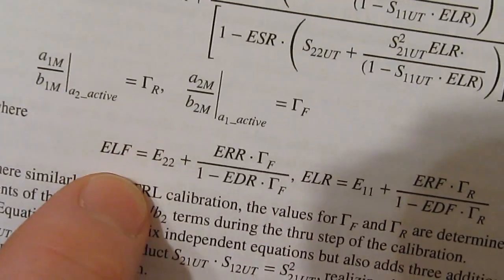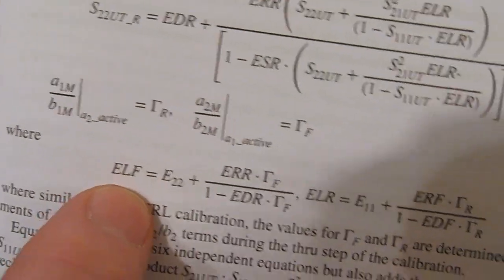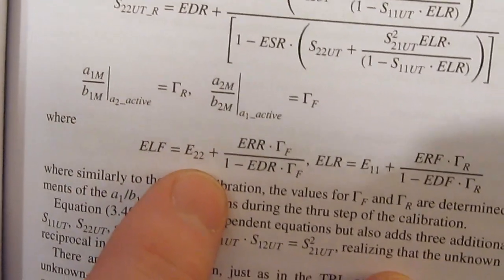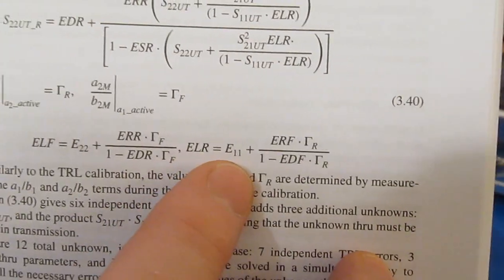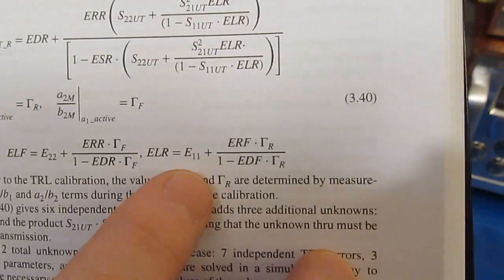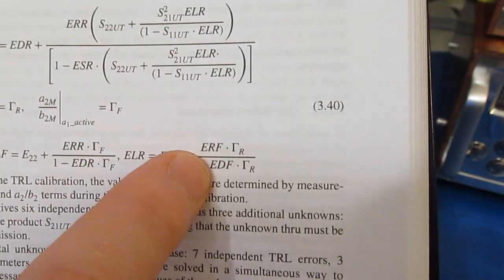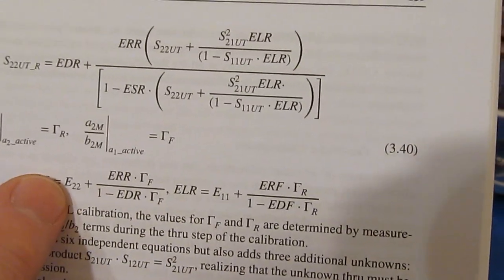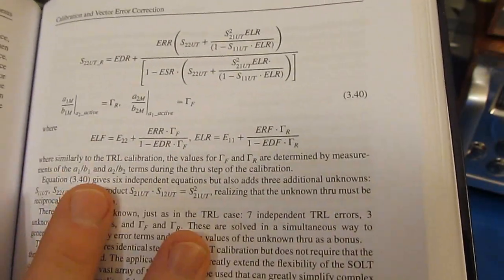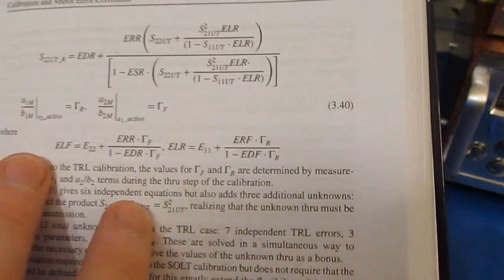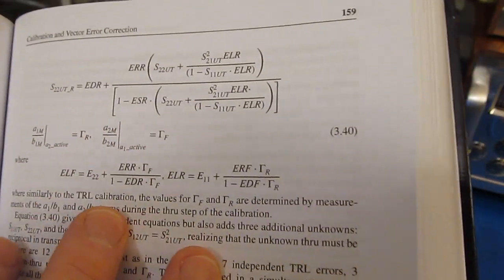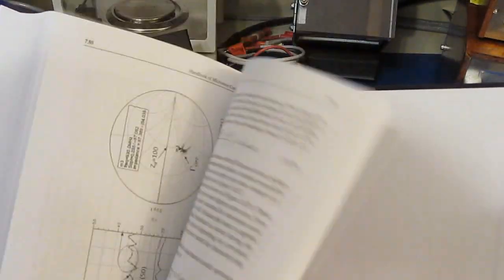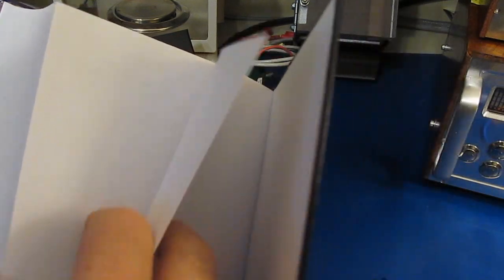The problem I run into is this book just does not have enough detail. You'll notice he mixes terms. He's got ELF is equal to E22. Well E22 is actually ESR. He's got E11, which is ESF. I don't understand why he uses like ERF, EDF, and then drops E11 and E22. In my opinion when you're buying a book like this, you're buying it to learn stuff. Intermixing these terms isn't really helping the reader, at least not in my case. My PNA actually supports the unknown through, it's built into the firmware. And of course that network analyzer is a four receiver system.